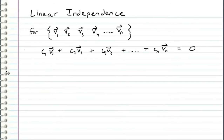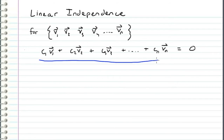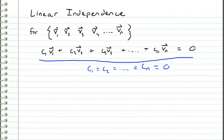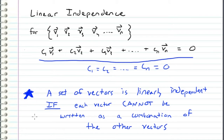In this video, I want to introduce the idea of linear independence. Let's say that we have a vector set containing v1, v2, v3, all the way to vn, and we want to decide whether or not this set is linearly independent. If these vectors are linearly independent, then the equation c1*v1 + ... + cn*vn = 0 must hold only if all of the c coefficients are equal to 0. Basically, a set of vectors is linearly independent if each vector cannot be written as a combination of the other vectors — linear independence implies uniqueness of each vector.